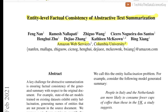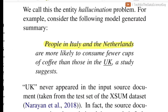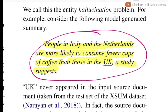At a very high level, the paper essentially introduces one of the major limitations faced by current neural text summarization systems, and that is entity-level hallucinations. For example, a generated summary from the XSum test dataset reads: 'People in Italy and Netherlands are more likely to consume fewer cups of coffee than those in UK, a study suggests.' The entity UK was not present in the source document at all, but the model generated it as part of the summary. This is the exact problem the paper focuses on — trying to reduce these entity hallucinations.